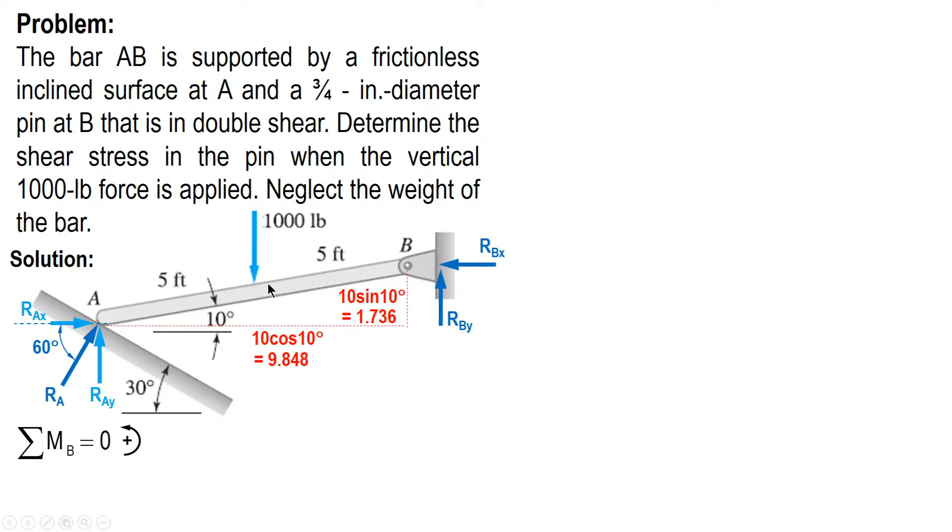Since 1000 pounds is acting at the midpoint between A and B, then the perpendicular distance of 1000 to B is one half of 9.848, which is 4.924. Sign convention is counterclockwise positive. We have this equation: RA cosine 60 times 1.736 plus 1000 times 4.924 minus RA sine 60 times 9.848 equals zero. Using your calculator, RA is equal to 642.768 pounds.